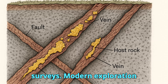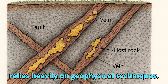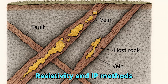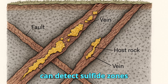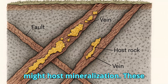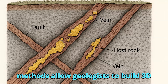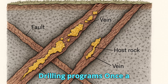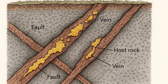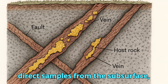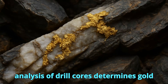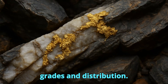Geophysical Surveys. Modern exploration relies heavily on geophysical techniques. Magnetic surveys help identify buried intrusive bodies and fault zones. Resistivity and IP (induced polarization) methods can detect sulfide zones associated with gold. Gravity surveys highlight dense rock bodies that might host mineralization. These methods allow geologists to build 3D models of the subsurface before drilling. Once a promising target is identified, core drilling or reverse circulation (RC) drilling is conducted, providing direct samples to confirm gold mineralization and understand ore body geometry. Detailed assay analysis of drill cores determines gold grades and distribution.